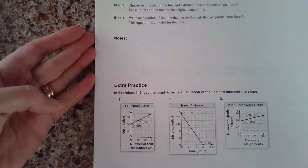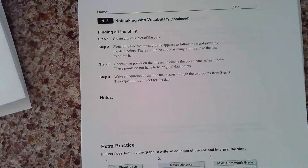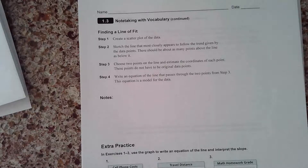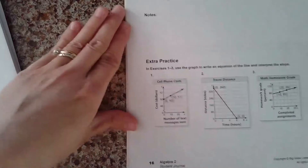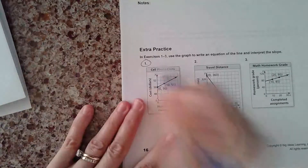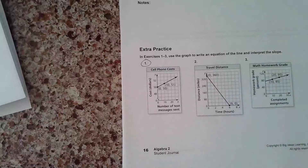I just wanted to go over one example of what we can do. I'm not going to really go over a lot of how to find the equation of a line — you should already know how to do that. I'm going to go through one example. If you feel like you need additional help, I encourage you to look through the examples in this section and obviously ask questions. I just want to look at one problem in particular — we're just going to look at number one. It says: use the graph to write an equation of the line and interpret the slope.